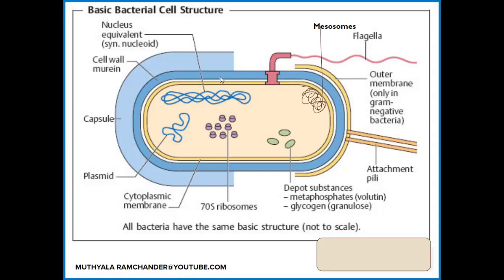Below the capsule, a thick cell wall is present. The cell wall mainly helps in protection of the bacterial cell and gives a proper shape to the bacteria. The chemicals of the bacterial cell wall are mainly peptidoglycans and muramic acids, also called murines.